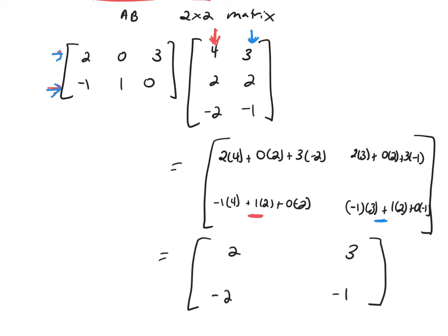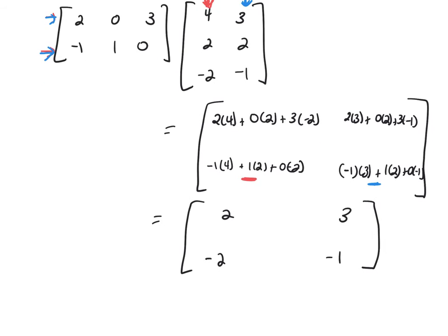And that would be the product of these two matrices. So you're taking rows and columns, rows from A and columns from B, and multiplying them together. And that's how you put them together in this way to get the product of these two matrices.